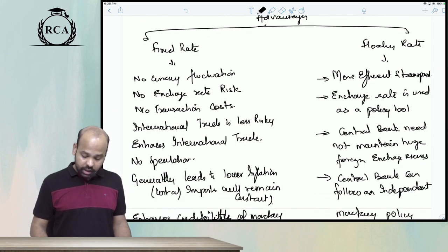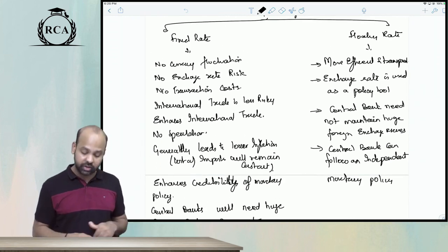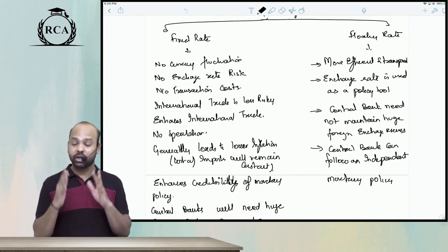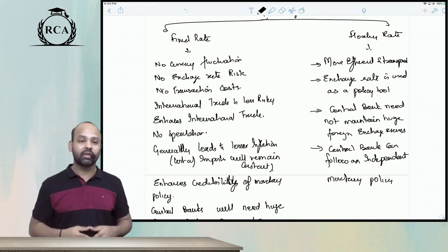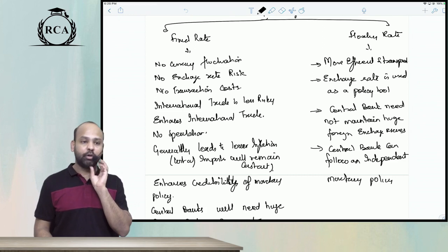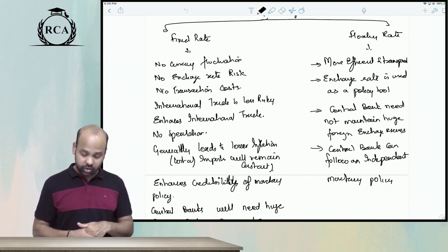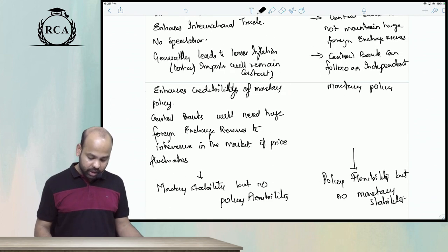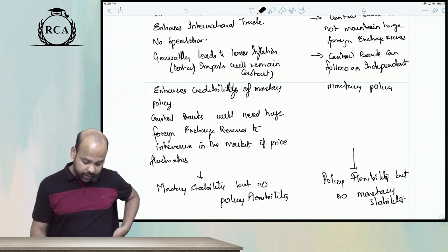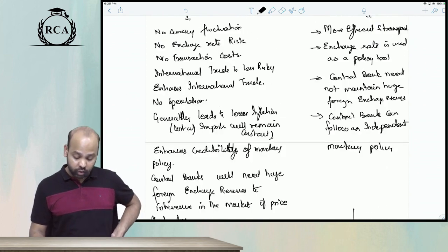There are advantages of both fixed rate and floating rate regimes. The advantage of a fixed rate regime is that there will be no currency fluctuations, so there is no foreign exchange risk, no transaction costs, and the amount of investment and trade will increase. There is stability in monetary policy, international trade will increase, there will be no speculation, and it generally leads to lower inflation because the price of imports will not increase. However, central banks will need to maintain huge foreign currency balances to interfere.